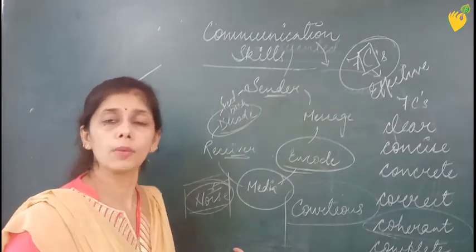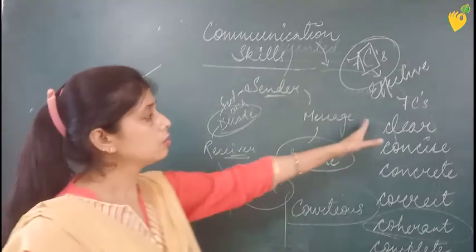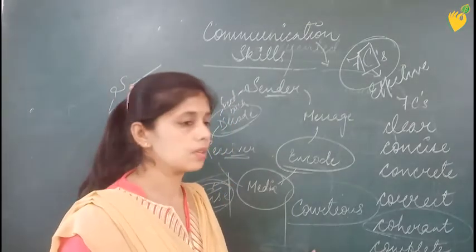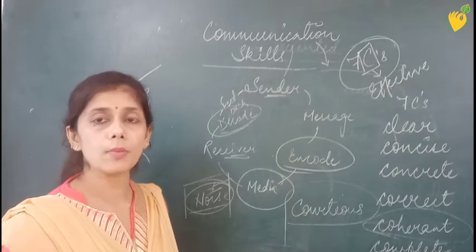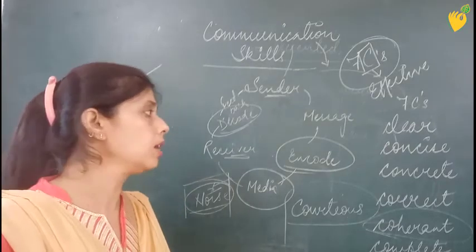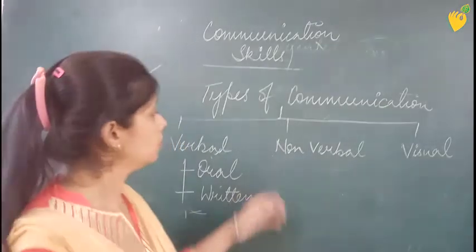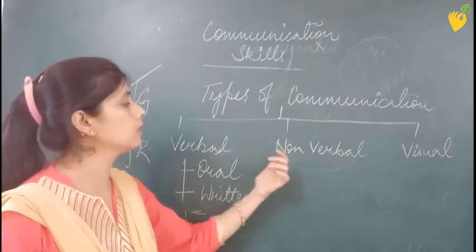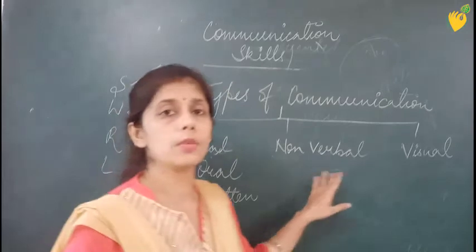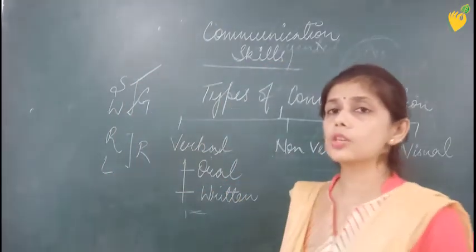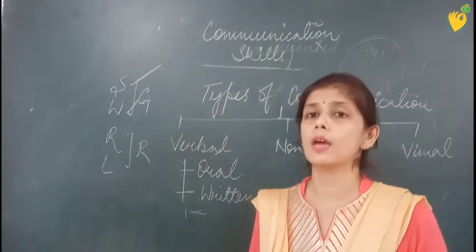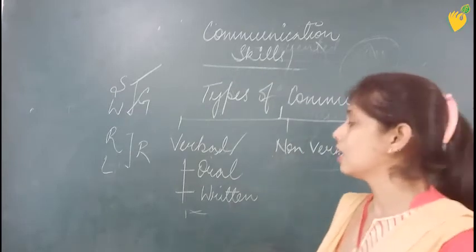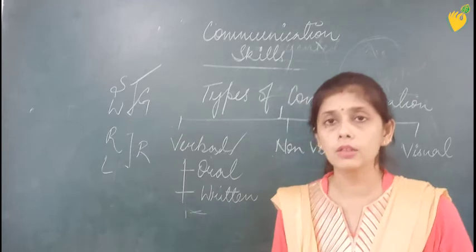If you talk in a polite and respectful manner, people will listen to you. So these are the 7 C's. When you follow these 7 C's, communication can become effective. Our next topic for the day is the types of communication. Communication is basically divided into 3 categories: verbal communication, non-verbal communication, and visual communication. Verbal communication is when I am speaking to you — giving something in the form of words, phrases, or sentences.